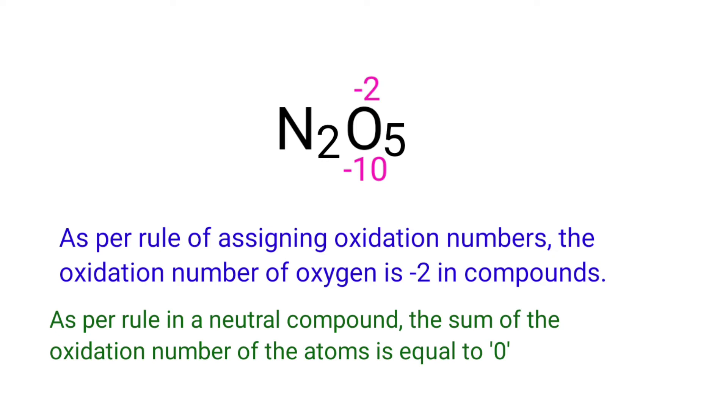As per the rule in a neutral compound, the sum of the oxidation number of the atoms is equal to zero. So the numbers along the bottom must add up to zero, meaning the number under N2 must be plus 10.